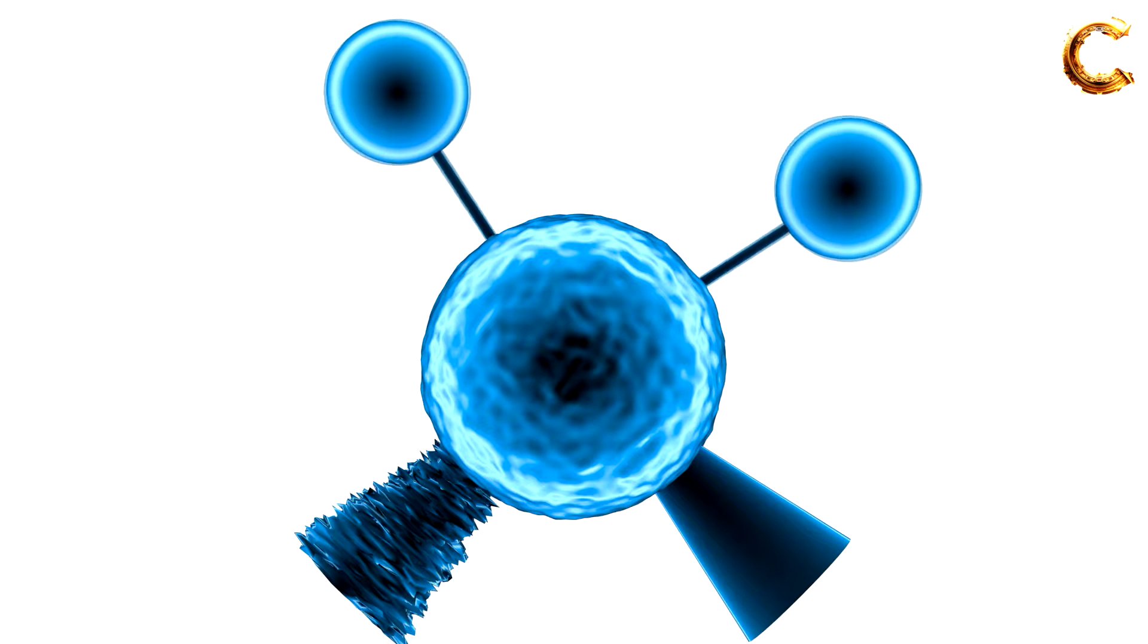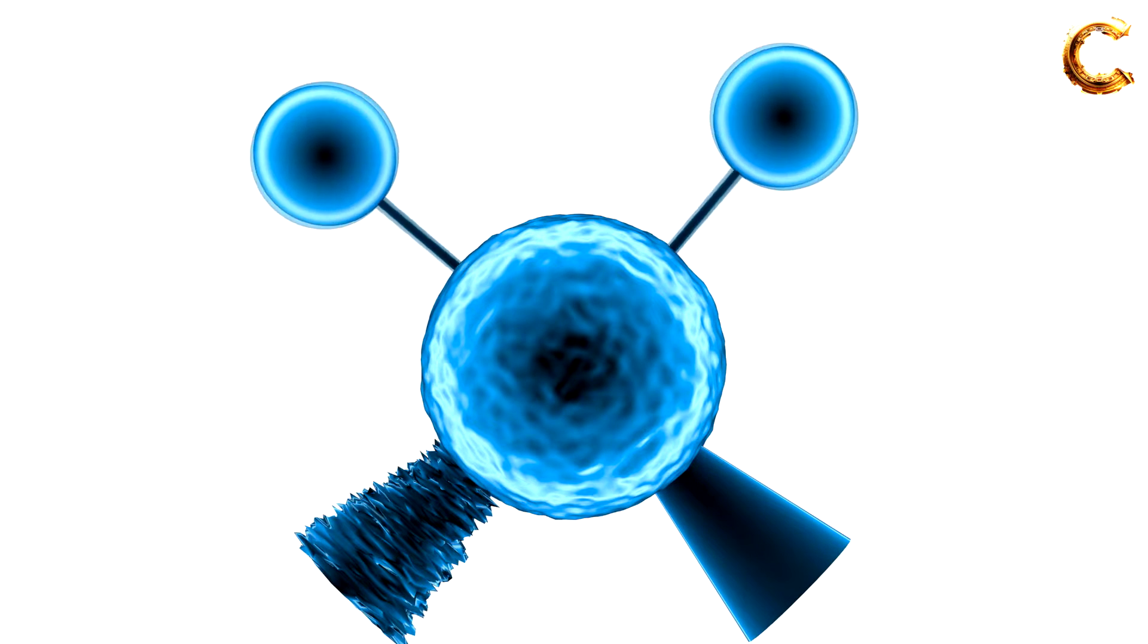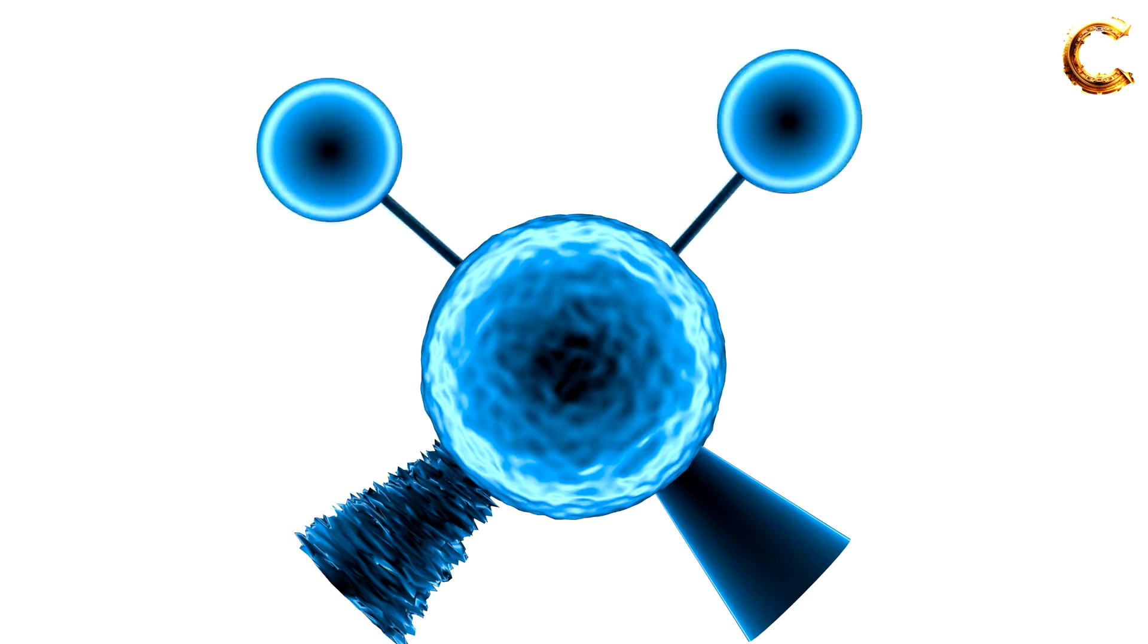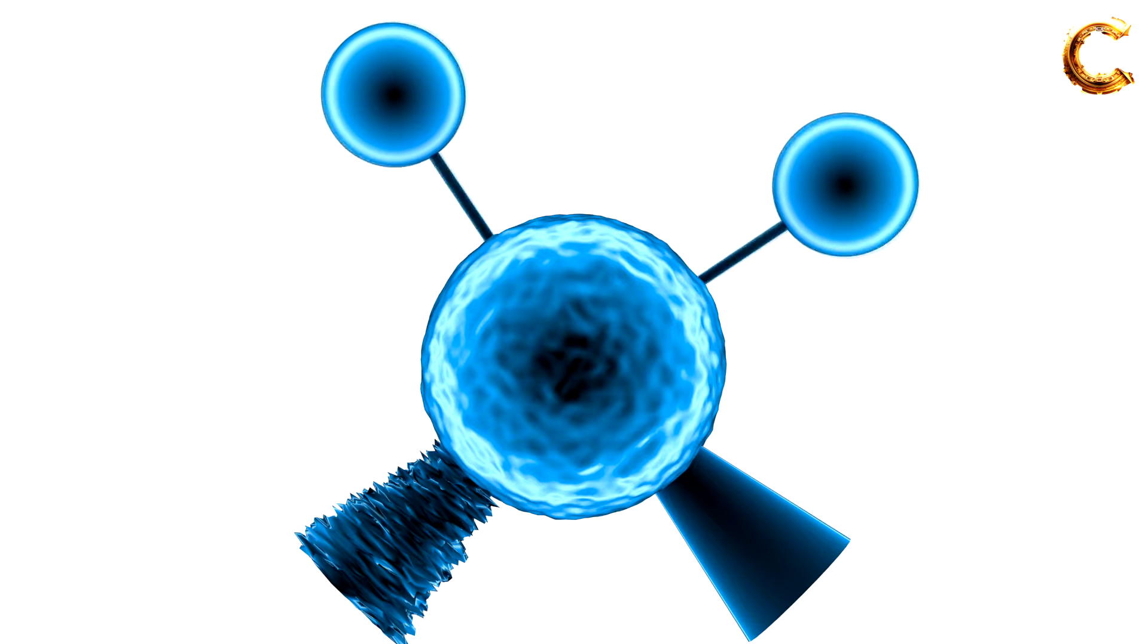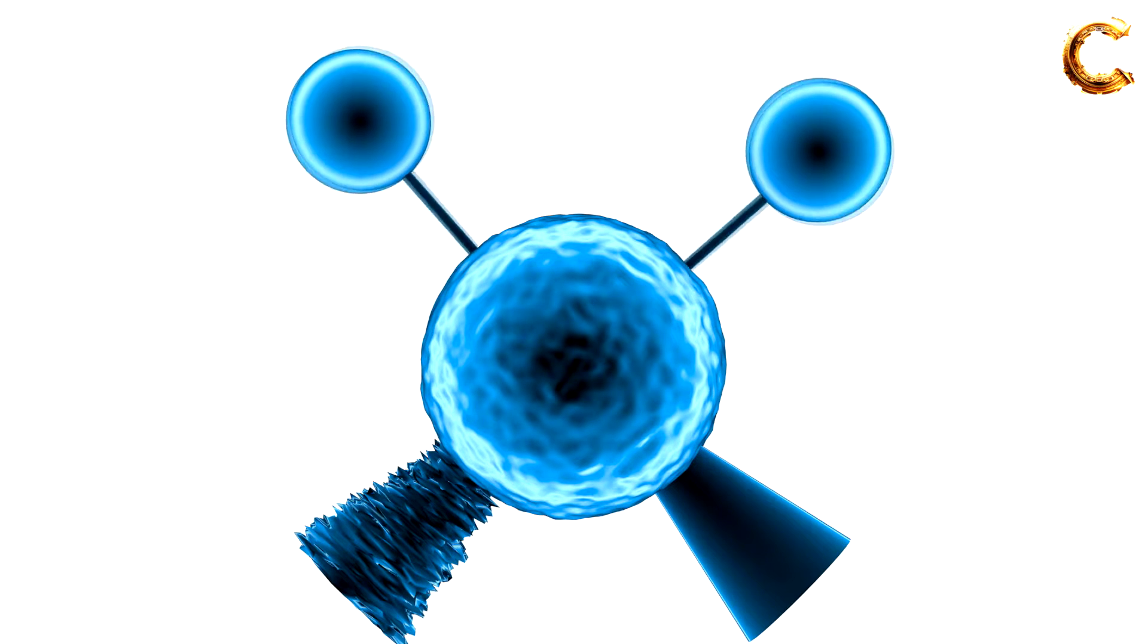In rocking vibrations, groups of atoms within a molecule move back and forth, causing a change in the angles between the bonds they form. This movement is akin to a rocking chair, where the atoms oscillate back and forth.